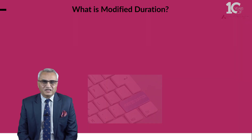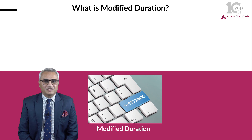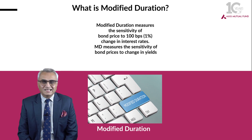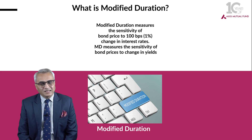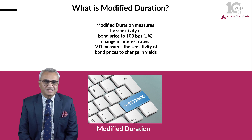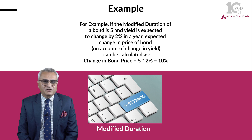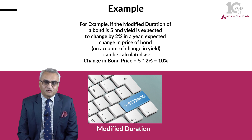What is modified duration? Modified duration measures the sensitivity of the price of bonds to a 1% change in interest rates. Let me explain with an example. If a modified duration is 5 and we expect a change in interest rates of 2% either upward or downward,